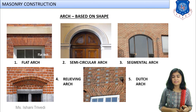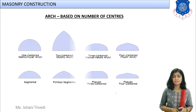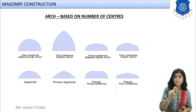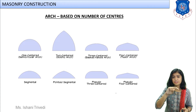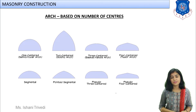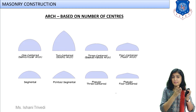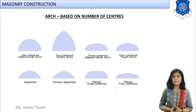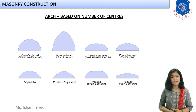The last classification is based on the number of centers. A one-centered arch uses a single circle; a two-centered arch joins two arcs; and you can go up to five-centered arches. This is a matter of geometry. This covers arch construction in detail along with lintels and arches. We will discuss more masonry topics in the next session. Have a good day, students. Thank you.